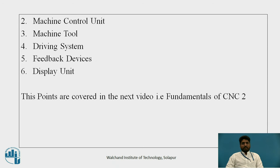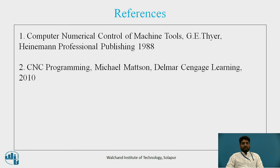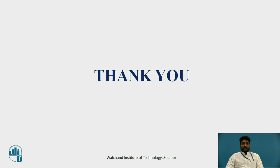Quick revision of all major elements of the CNC: first is input devices, second is machine control unit, third is machine tool, fourth is driving system, fifth is feedback devices, and the last is display unit. These five elements will be covered in the next video — fundamentals of CNC part 2. These are the references used. Thank you.